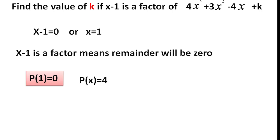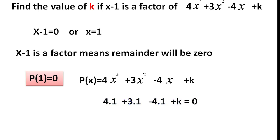P of x is 4x cubed plus 3x squared minus 4x plus k. We substitute x equals 1: 4 times 1 cubed plus 3 times 1 squared minus 4 times 1 plus k equals 0, since x minus 1 is a factor. Simplifying, 4 plus 3 minus 4 plus k equals 0, so k equals minus 3.